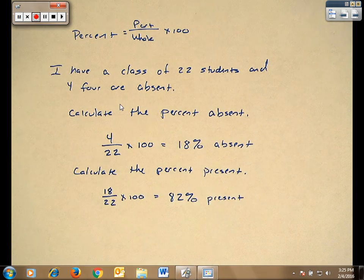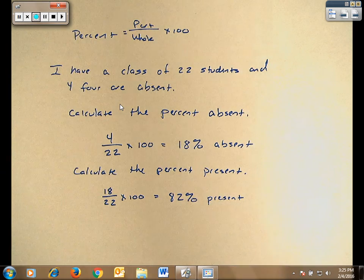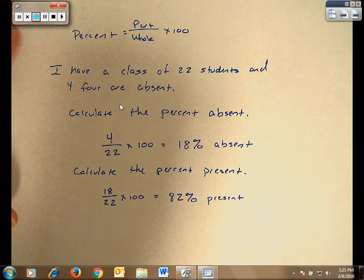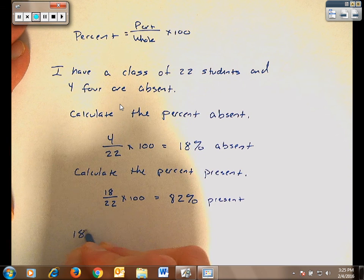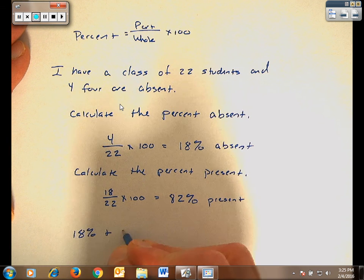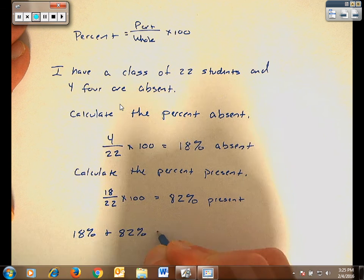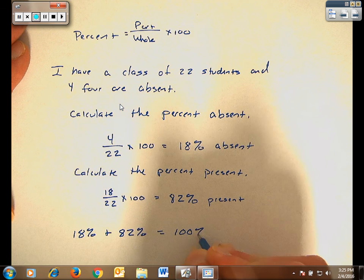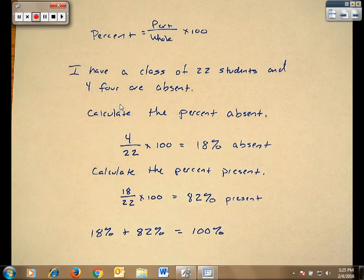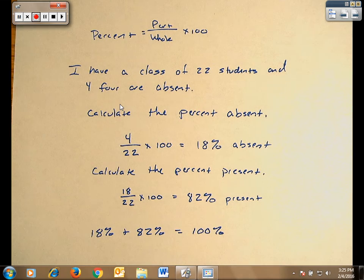Now if I do both halves, if I do the number missing and the number that are present, when I add those two values together, I should get 100%. So it's a good way to check if you're asked to do both parts whether or not you've done it right.